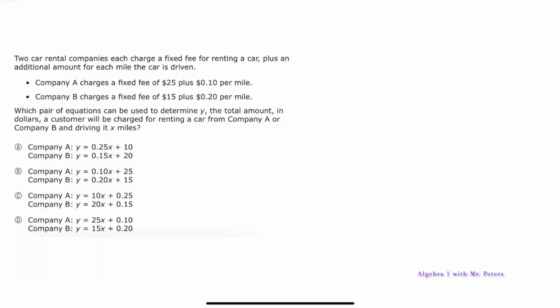In the first problem they give us two scenarios and they want us to match the equation to it. This could be easy if we understand the fixed fee of $25 and the fixed fee of $15. Our equation is going to take the format y = mx + b. The $15 and $25 are going to be our b — this is what we pay before we even start driving the vehicle and paying the additional 10 or 20 cents per mile based on how far we go.